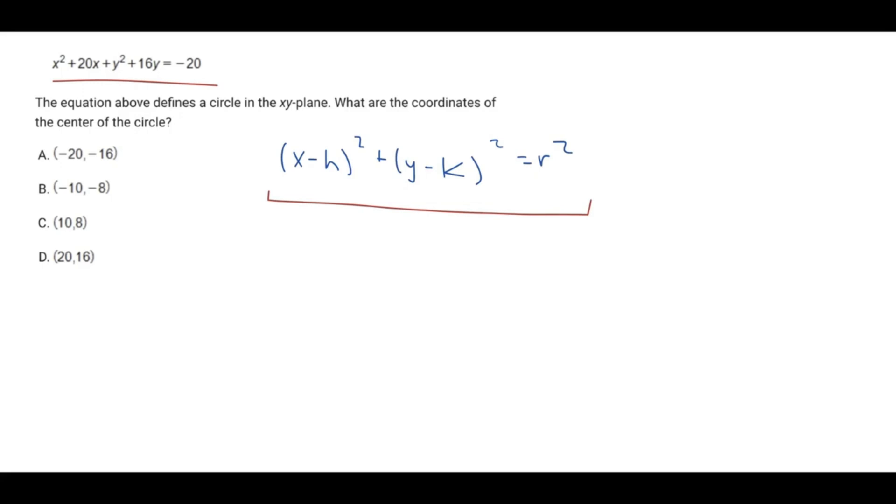So first off, we need to convert the top equation to our standard circle equation form. And the way we're going to do this is to find a perfect square trinomial, and we can do that by using completing the square.